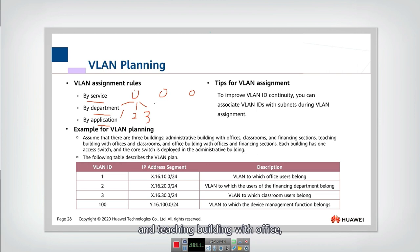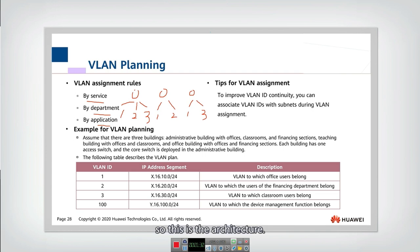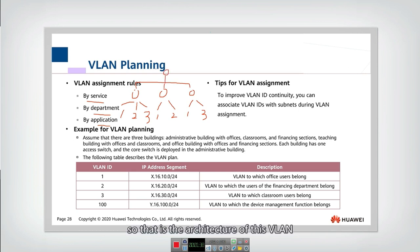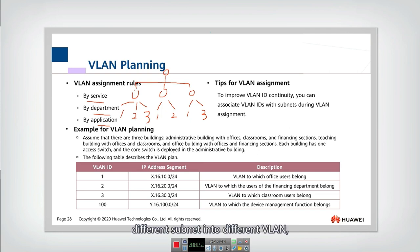The teaching building has an office assigned to VLAN 1 and a classroom assigned to VLAN 2. The office building has an office assigned to VLAN 1 and a financial section assigned to VLAN 3. So that is the architecture of these three buildings. These three switches are connected to a core switch.